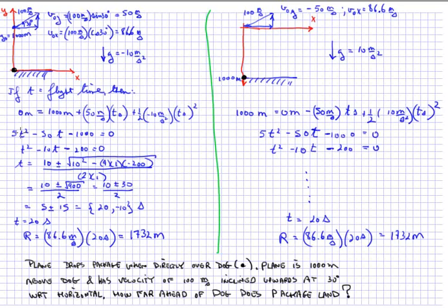5t squared minus 50t minus 1000, dividing through by 5, t squared minus 10t minus 200 is equal to 0. And so the quadratic equation gives me this.